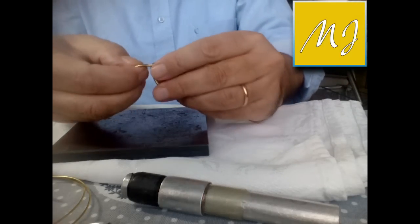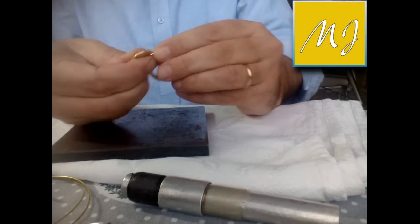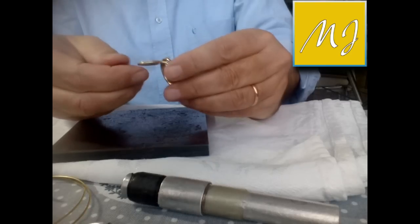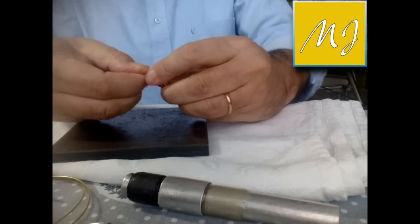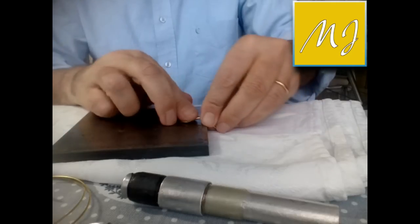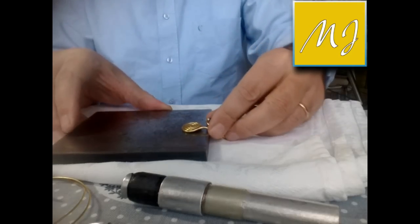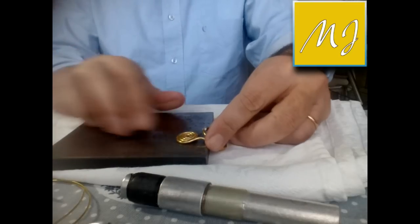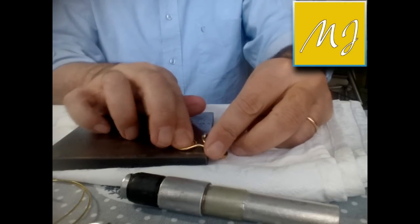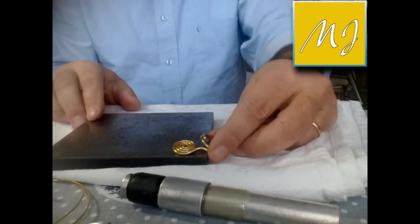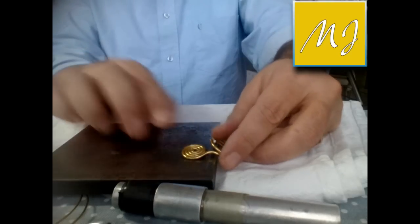Una volta finito di martellare, il metallo acquisterà una maggiore rigidità. A noi interessava leggermente ampliare la superficie per poter poi finire con la battitura con un martellino.